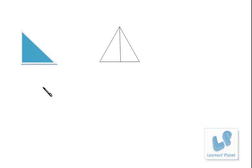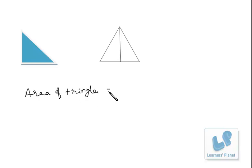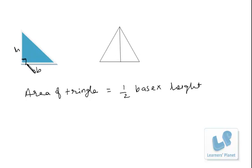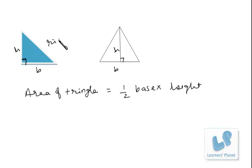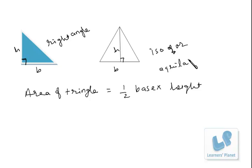Now we have triangles. The area of a triangle is half of base into height. This is the base and this is the height. Since it is a right-angle triangle, the area of triangle will be half of base into height. Suppose the triangle is a right-angle triangle — then this will be known as base and this is height. So it's half of base into height. This is an isosceles or equilateral triangle, but we must know the height of the triangle and the length of the base.